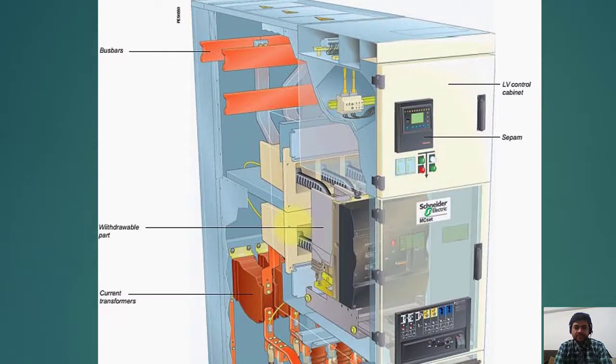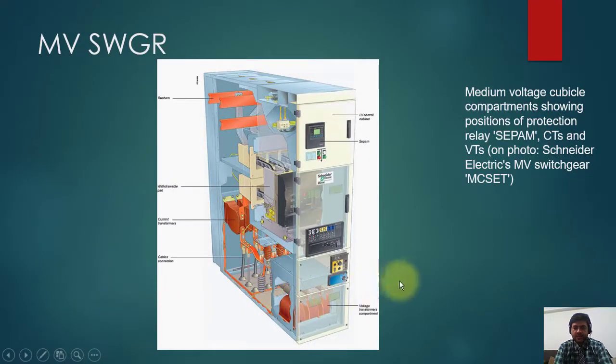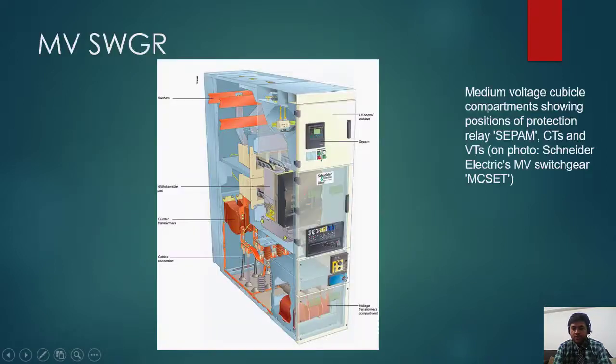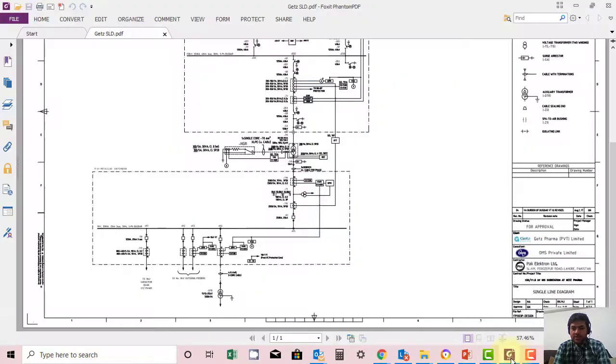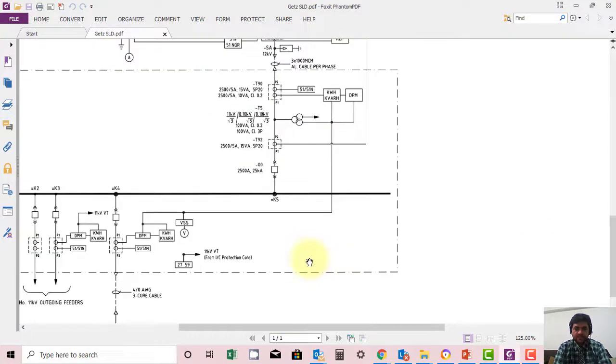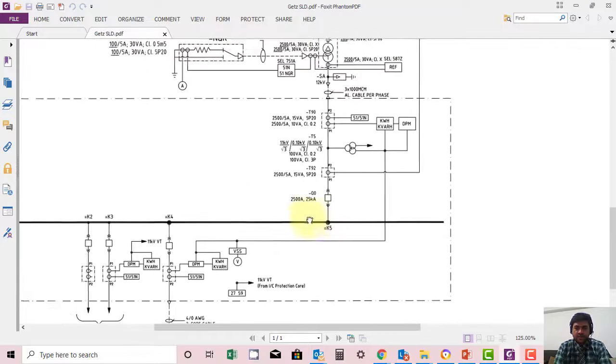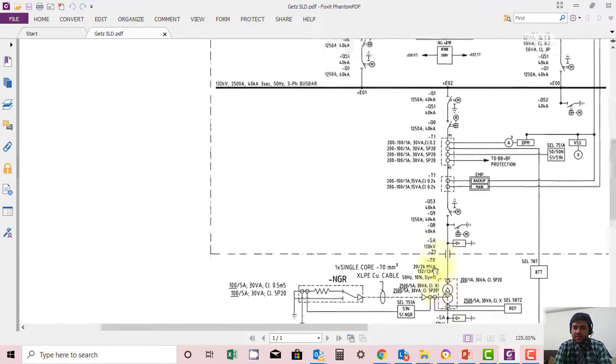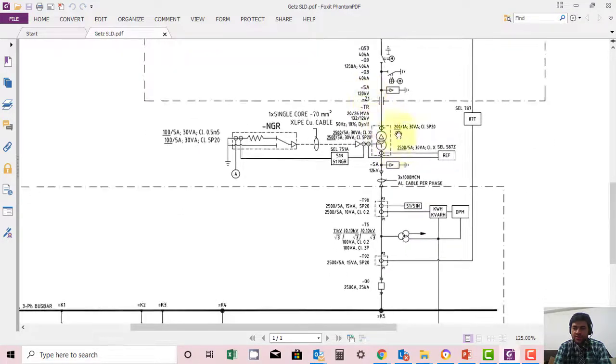We will move to the single line diagram in which you can see how the MV panels are connected in a system. What I have done here, you can see this is 132 by 11 kV transformer which is converting 132 kV to 11 kV or 12 kV. So this is a delta-star transformer. The output of this one is connected to feeder K5.